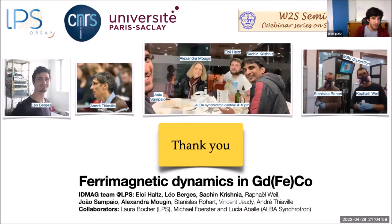In summary, rare earth transition metal ferrimagnetic alloys are very interesting for both fundamental studies and applications, featuring two special temperatures: the magnetic compensation temperature (no Zeeman interaction) and the angular momentum compensation temperature (no magnetic precession). Suppressing precession eliminates skyrmion deflection and domain wall precession driven by spin-orbit torques, and BLS spin wave spectroscopy provides detailed access to ferrimagnet properties. Thank you for your attention.